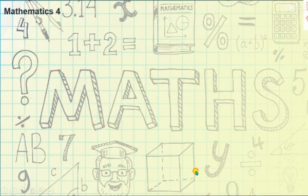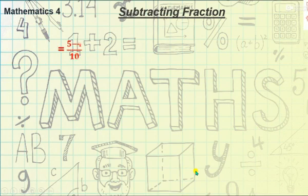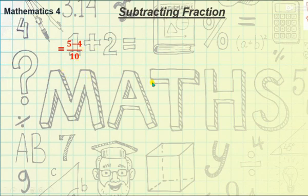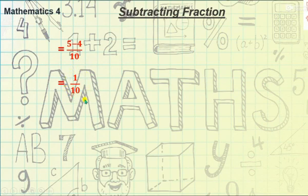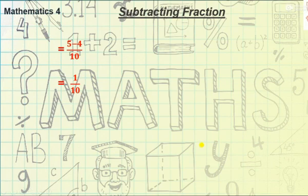Now for the second step: we write the denominator one time and subtract the values of the numerator. 5 minus 4 is 1, and 10 stays as it is. So the answer is 1/10. It is already in its simplest form — it cannot be divided further. You just need to keep these steps of subtracting fractions in mind to solve these questions.